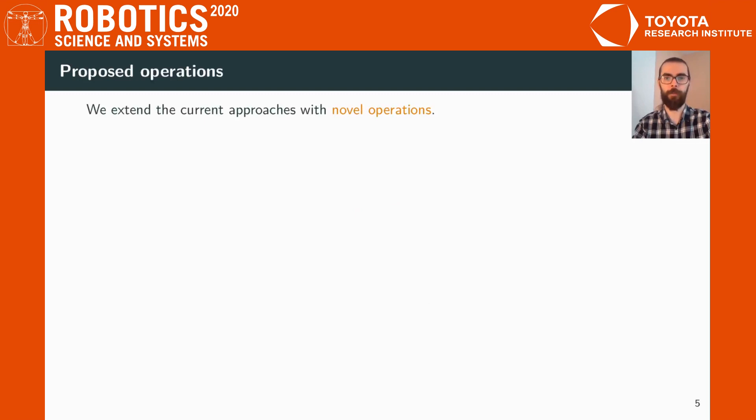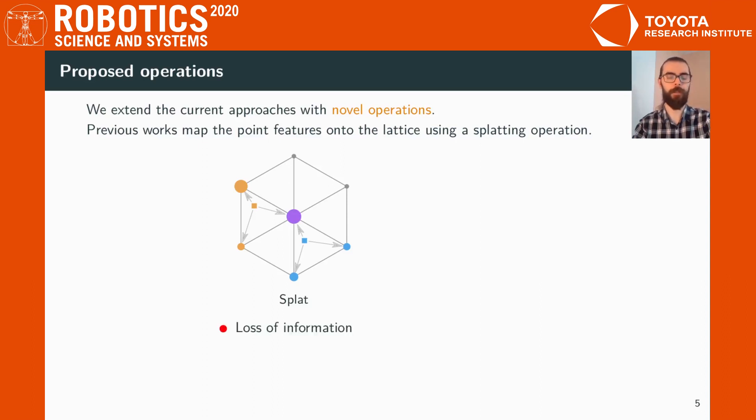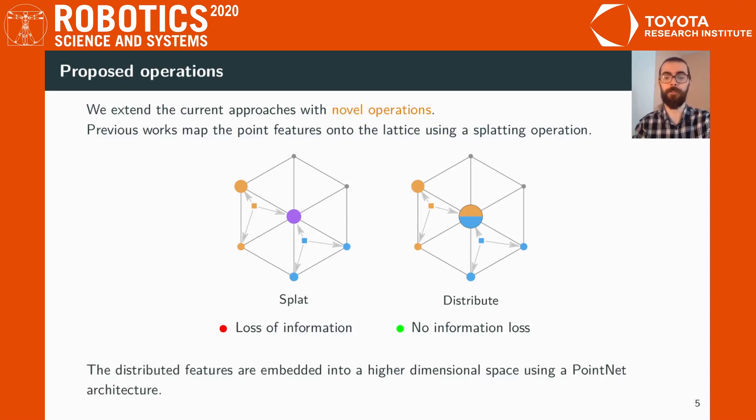We extend the current approaches with novel operations. Previous work would map the features of the points onto the lattice using a splatting operation. However, this would cause a loss of information as the features of the points would merge together. Here we propose a distribution operation, which keeps track of the contributions of the points and causes no loss of information. Afterwards, the features are embedded into a higher dimensional space using a PointNet architecture.